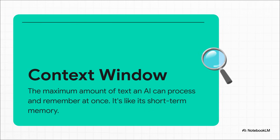Next up is the context window. This is, for all intents and purposes, the AI's short-term memory — the amount of information it can hold in its mind at one time. If your conversation gets too long and goes past that window, the AI literally starts to forget what you were talking about at the beginning.